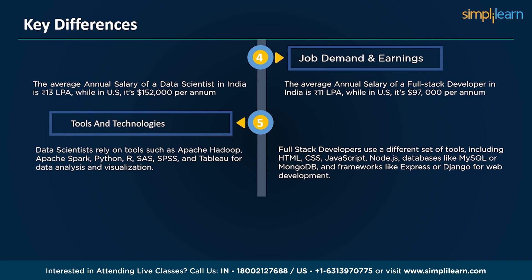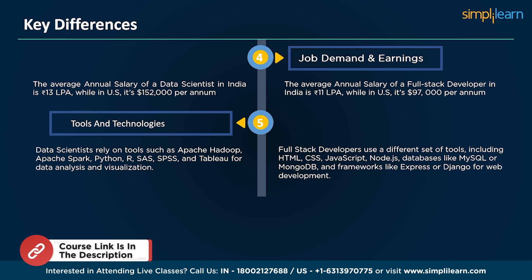In summary, data scientists and full stack developers have different educational backgrounds, skill sets, and job responsibilities. While they both use programming languages like Python, their focus and roles within the tech industry are distinct, making them both essential parts of the digital landscape. Choosing a career as a data scientist or full stack developer ultimately depends on your interests and skillset, as both professions offer a promising future with strong job outlook and high salary potential. Advanced education such as a master's degree can provide a competitive edge in these fields.